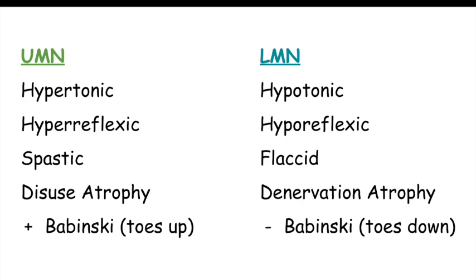Disuse atrophy occurs in upper motor neuron lesions because of the lesion itself — these patients may not be able to send signals to the muscle to move and function as it previously did. So the muscle is not in use, resulting in disuse atrophy. Upper motor neuron lesions can cause muscles to be spastic initially, but despite frequent contractions, patients still cannot use their muscles normally, so disuse atrophy develops a bit later — it's not an acute finding. The Babinski reflex occurs when the sole of the foot is firmly stroked; the big toe goes upward and the other toes fan out.